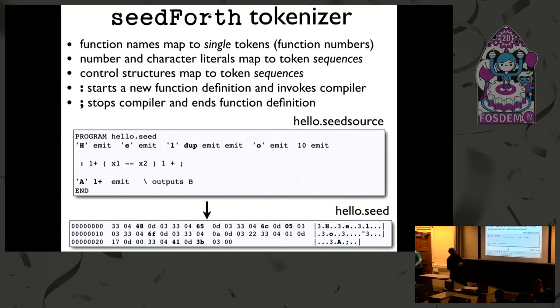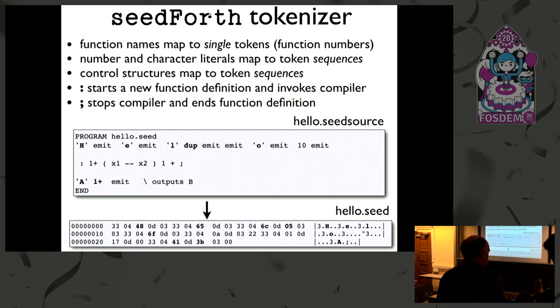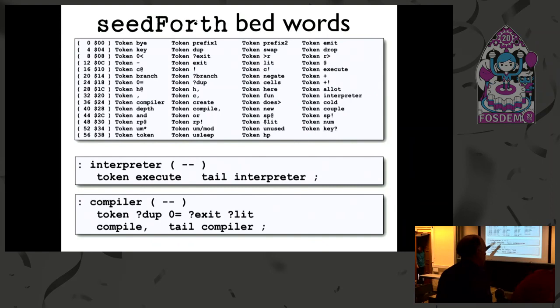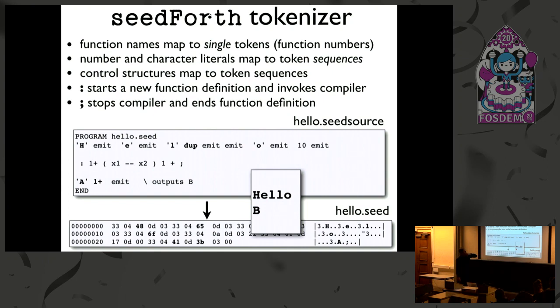Looking at the source code: here is the hello world example for SeedForce. We see in the tokenized output also the string 'hello'. We can have a function definition that increments the top element on the stack like this, and then we can invoke it immediately. So again we have interpret, compile, and execute of things. If you look carefully at the previous slides, the next token in the sequence would be 0x3B — and there's the 0x3B, tokenized, which will reside in the invocation in the compiler.